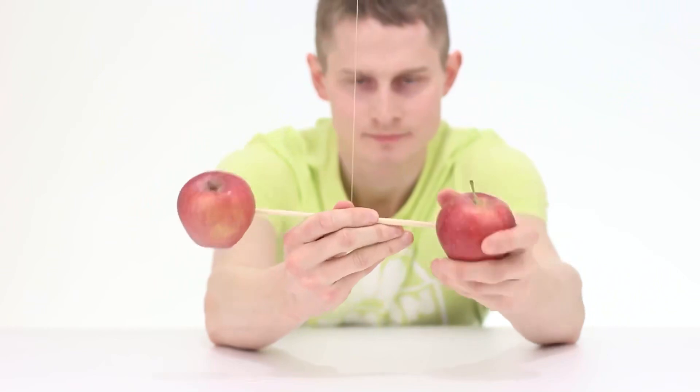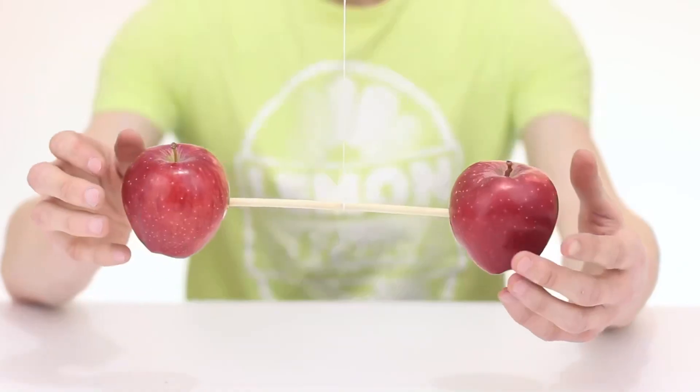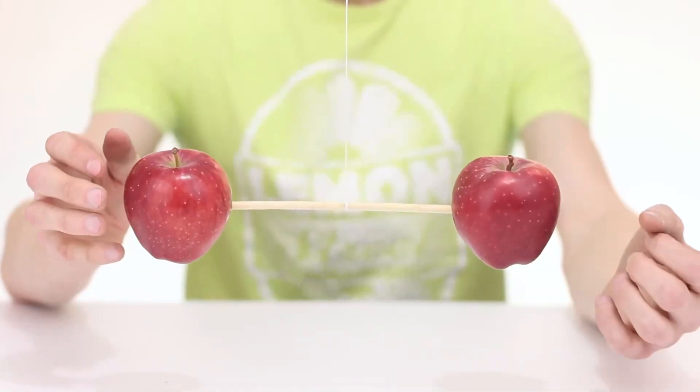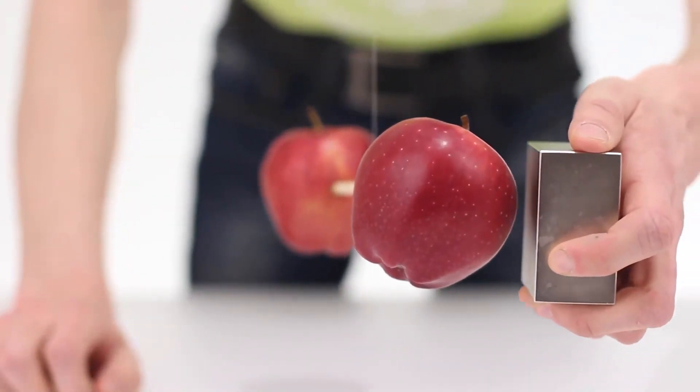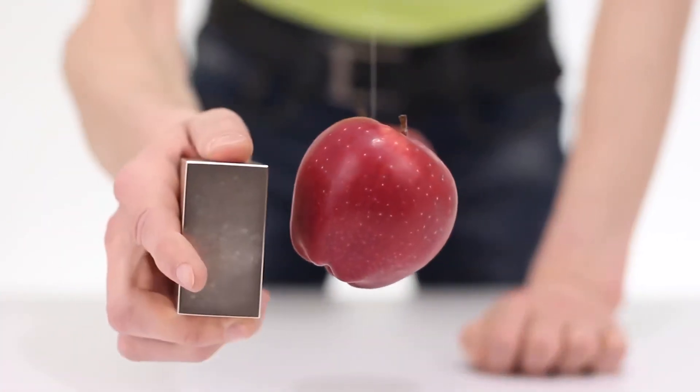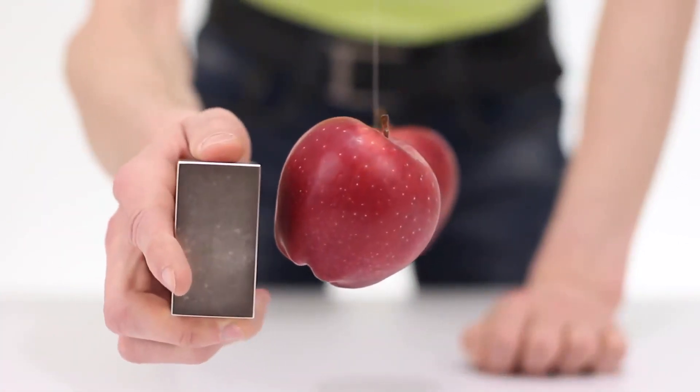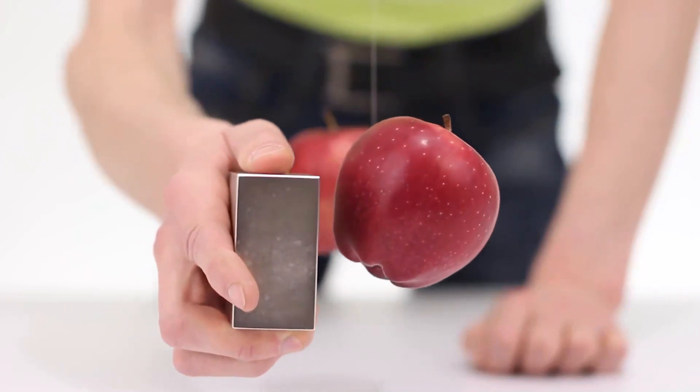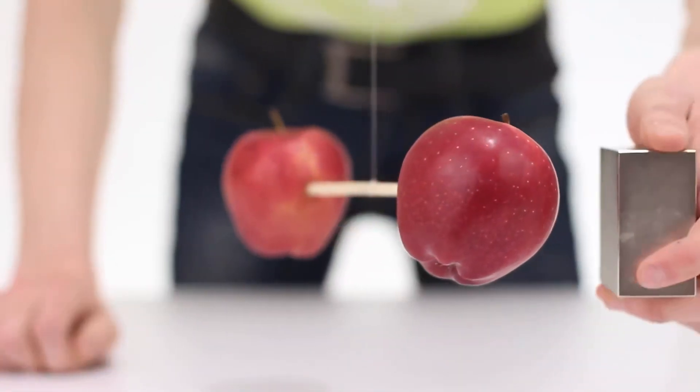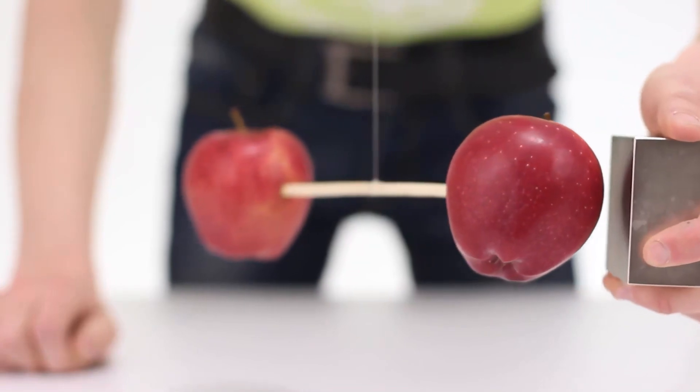But what if you put two apples on a wooden stick and balance them in the air? You can see that the magnet still causes small fluctuations in the apple. It seems that there really is a lot of iron in this fruit. This trick is also great with grapes. Who would have thought that fruits and berries can be magnetic?